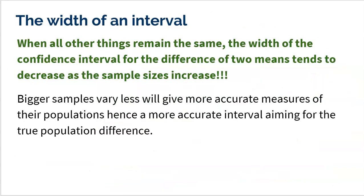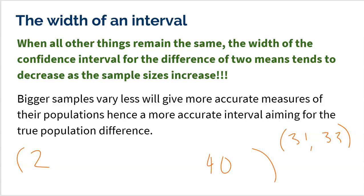Let's talk about the width of the interval — this is actually the fourth time we've discussed this idea, and it's super important. When all other things remain the same, the width of the confidence interval for the difference of two means tends to decrease as the sample size increases. Bigger samples vary less, so you get more accurate measures of those populations and hence a more accurate interval. Say I know the answer is anywhere from 2 to 40 — that's a very wide interval. It'd be much better to say the answer is anywhere from 31 to 33. Bigger sample sizes get you that tight, accurate window.